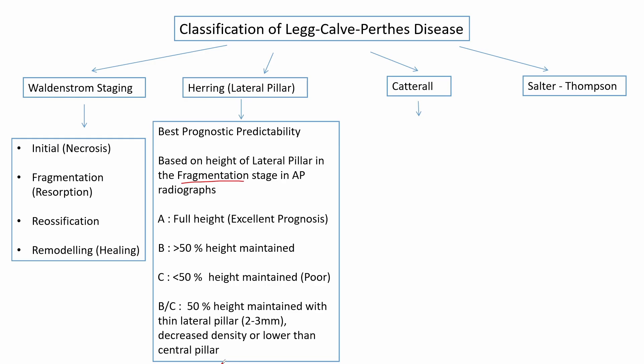The Herring lateral pillar classification is very important for prognostication. In type A, there is a uniformly excellent prognosis. In type C, there is a uniformly poor prognosis. However, in type B, patients less than eight years old have a fair to good prognosis, whereas patients greater than eight years have a poor prognosis.